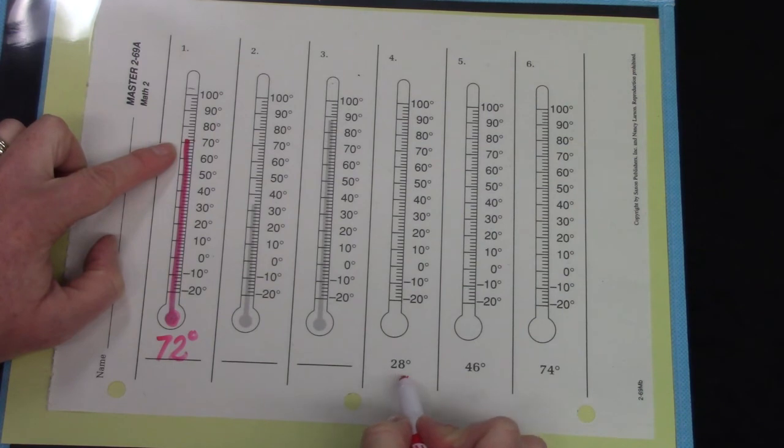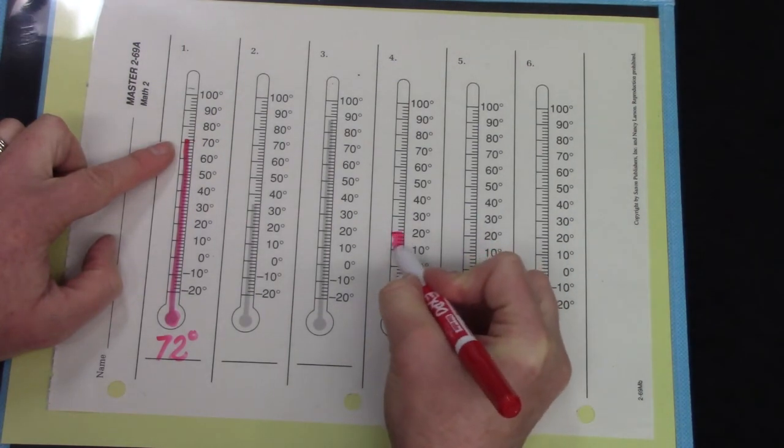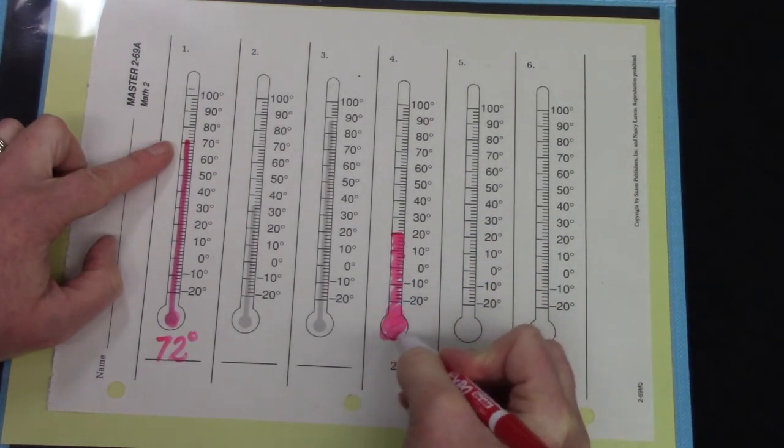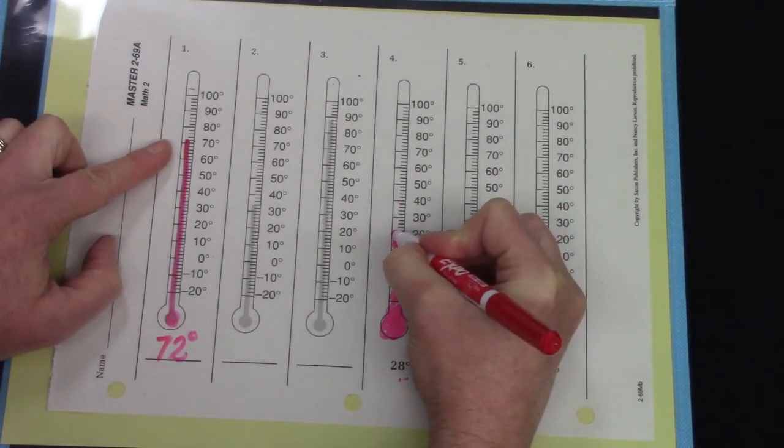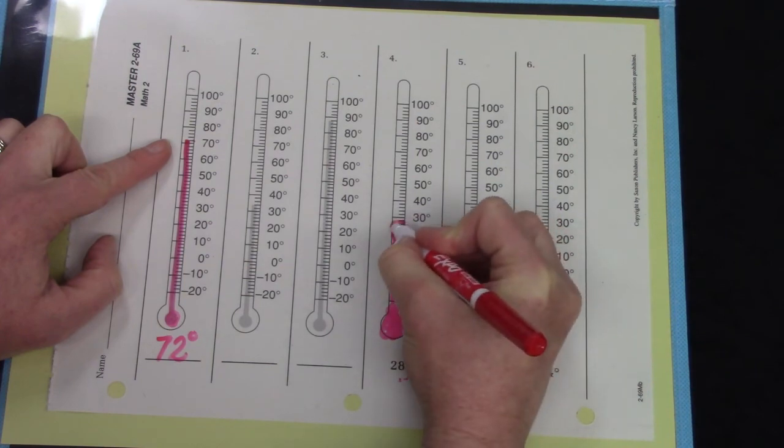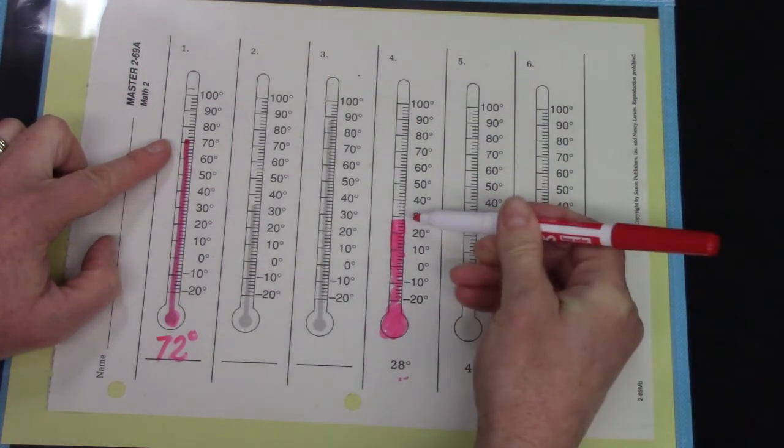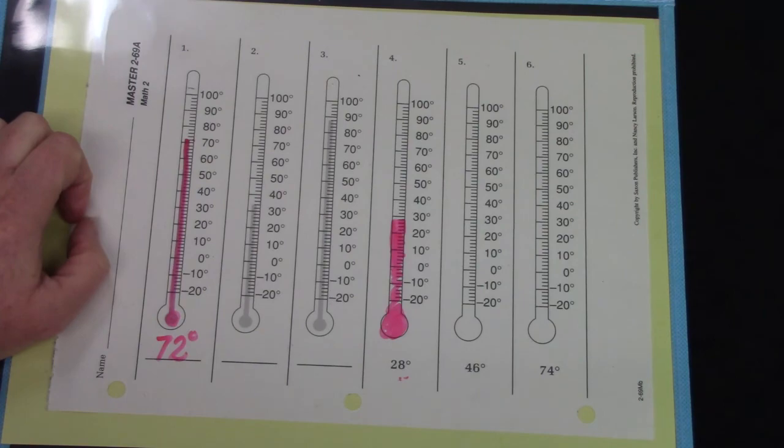I would like for you to find the temperature on the next two thermometers as well. Well, this thermometer wants us to find 28 degrees on the thermometer. Well, here's 20, but we're not finding 20. We want to find 28. We count by 2. 22, 24, 26, and 28. It's almost up to 30.